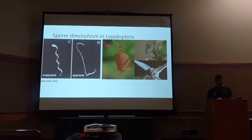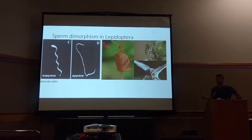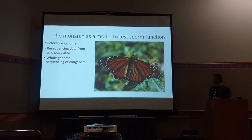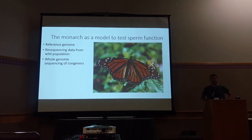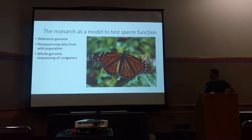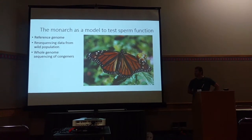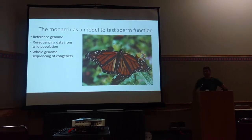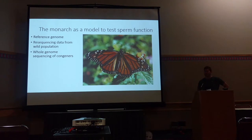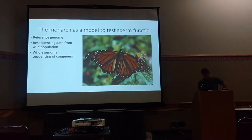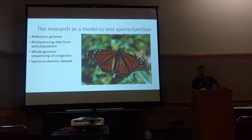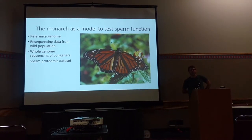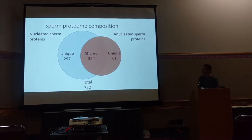One of the hypothesized roles of anucleated sperm is that they're involved in sperm competition. To do this, we need a volunteer, and that's the monarch butterfly — everybody's favorite butterfly, the state insect of like seven states or something. For our purposes, we like it because it has a lot of good bioinformatic resources. Most important for us is that it's one of two Lepidoptera for which we have a sperm proteomic dataset.